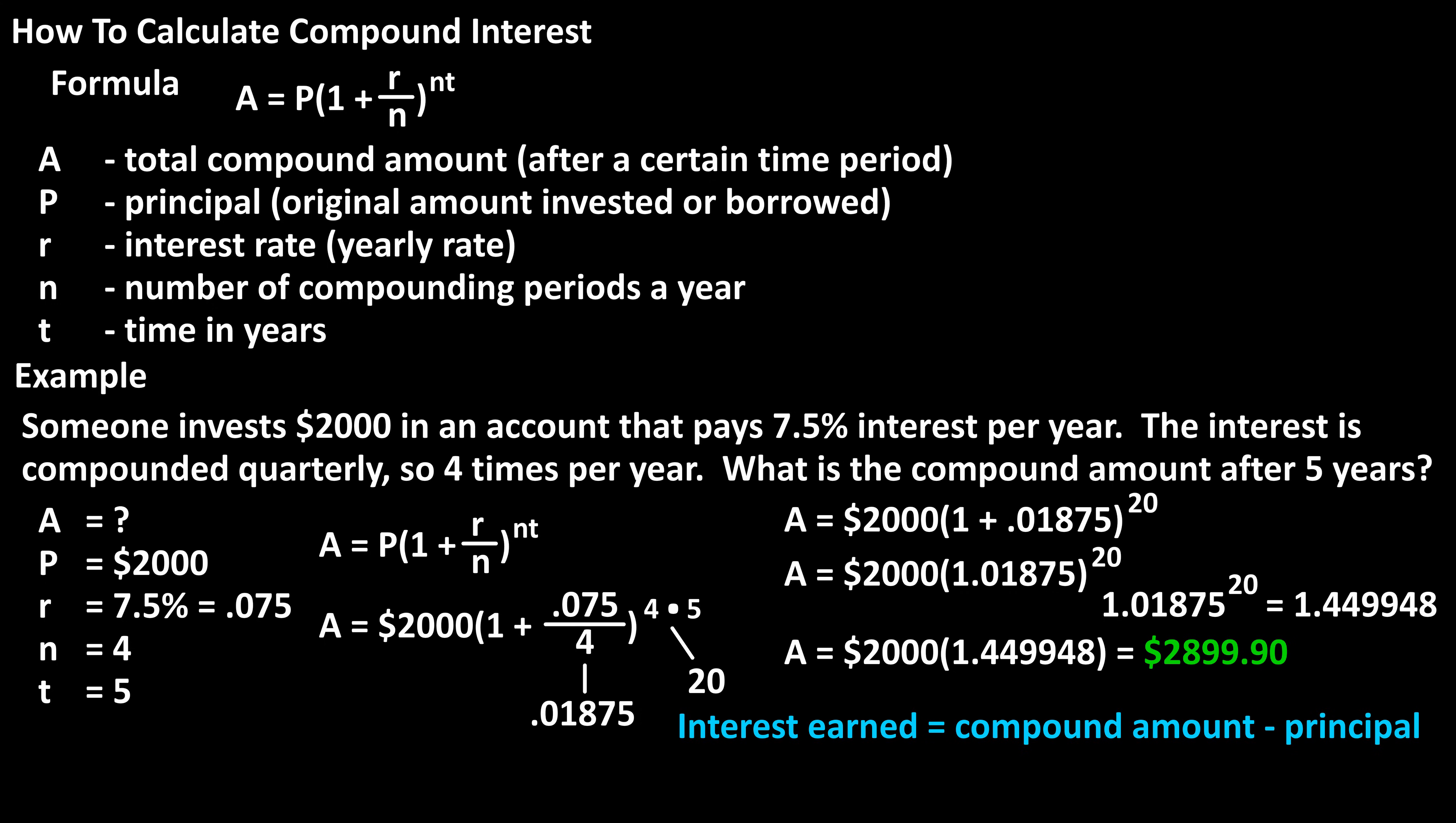And if we want to know the interest on this investment, we use the formula interest equals the total compound amount minus the principal, or I equals A minus P. For this investment, we have $2,899.90 minus $2,000, which equals $899.90 as the total amount of interest.